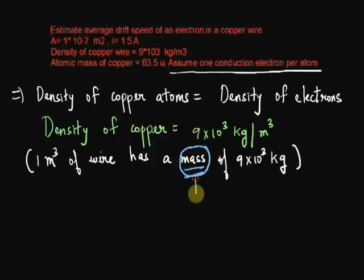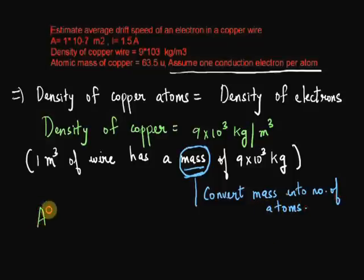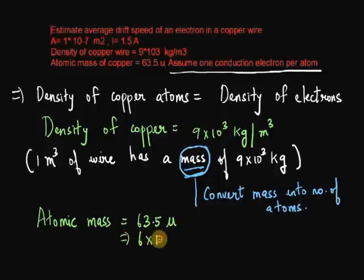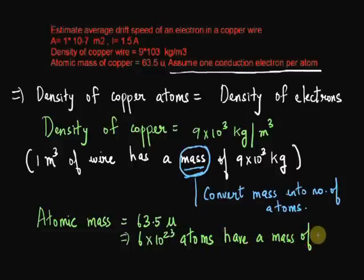That's where the atomic mass comes in. An atomic mass of an element simply tells us the mass of 6 into 10 to power 23 atoms of that particular element. So in the case of copper, the atomic mass is 63.5 grams, which means 6 into 10 to power 23 atoms of copper have a combined mass of 63.5 grams.